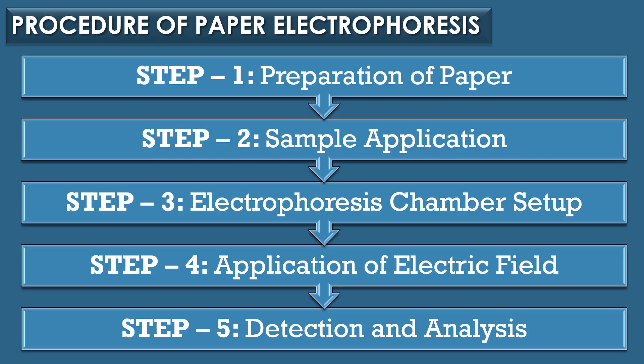Procedure of paper electrophoresis — there are five steps. Step one is preparation of paper: the filter paper strip is cut to the required size and soaked in a buffer solution to maintain a stable pH throughout the experiment. Step two is sample application: a small aliquot of sample is applied onto the paper, generally some distance away from one end. Precise application is crucial to prevent excessive spreading, which can degrade resolution.